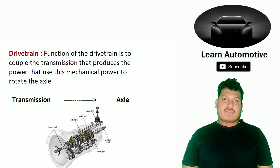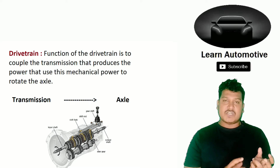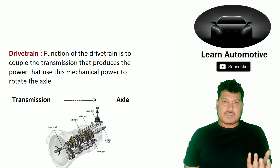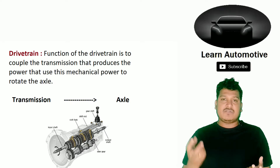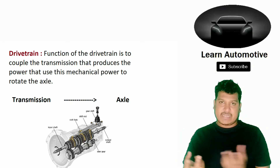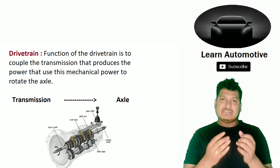The drive train is a system which sends the power from the transmission to the axle. So you have the transmission, you have the axle — the power traveling from the transmission to the axle is called the drive train.